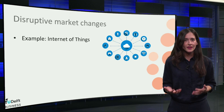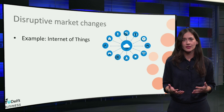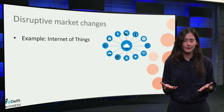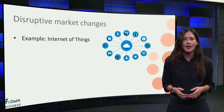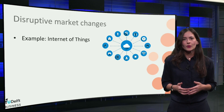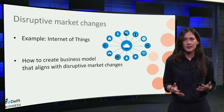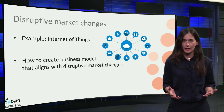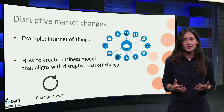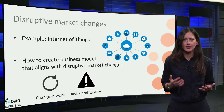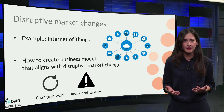The Internet of Things has the potential to affect every business, including yours. How will you come up with an innovative business model that aligns with a new innovation? How does it change your work? Does it increase your risks or profitability?